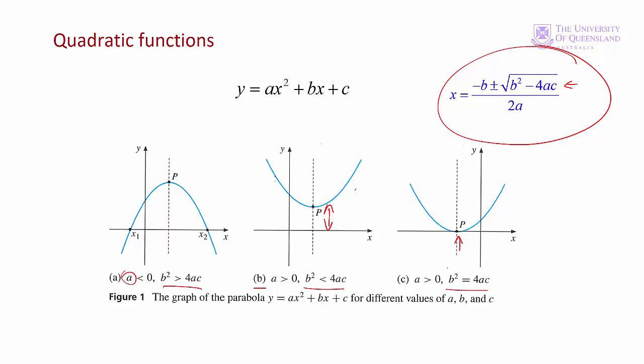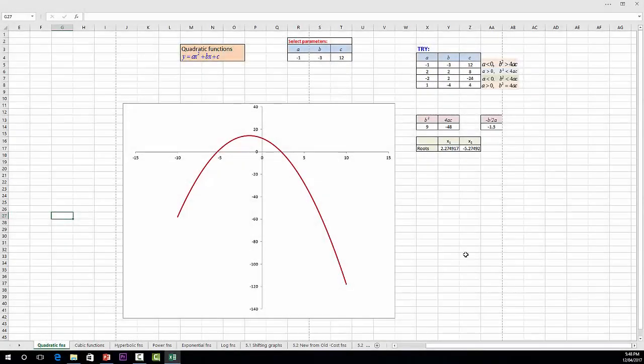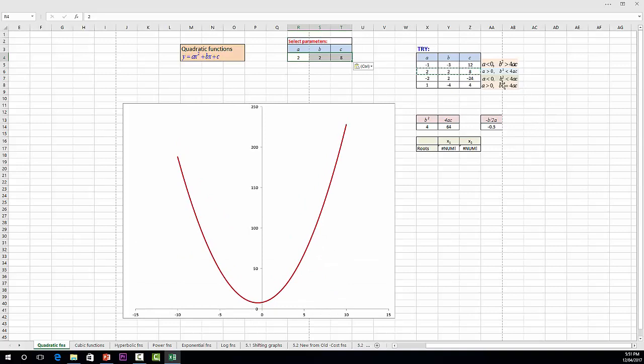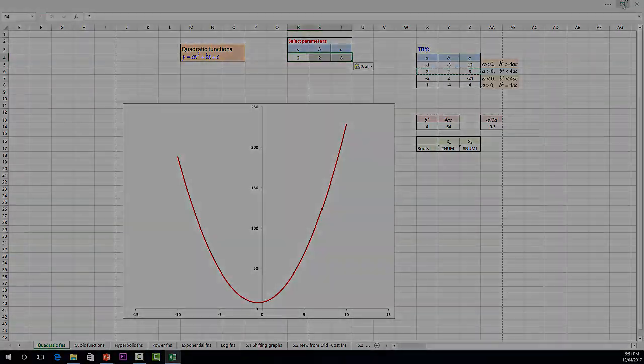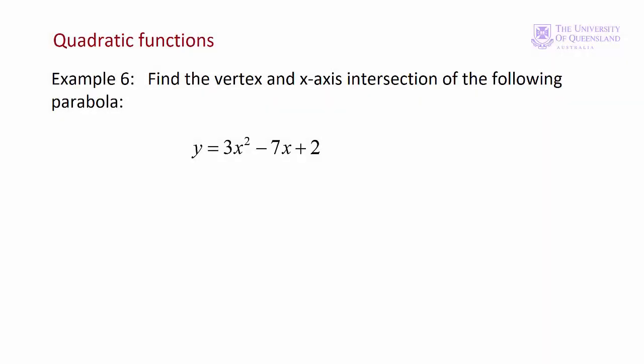This is an excel file where you can change the values a, b, and c and see how that changes the shape of the quadratic function. Let's have a quick look at that. Here we have a graph of a quadratic function. In this case, we have the parameters here. a is equal to minus 1, b is equal to minus 3, c is equal to 12. Here we have various values. We've got b squared, 4ac, so we can see what the argument of the square root is. We have the value of x at the vertex, so minus b on 2a, and we have the roots. You can change the parameters. Here are some typical values. So in this case, b squared is less than 4ac, a is positive. We see it's a u-shape, and it doesn't cut the x-axis, and so on. You can try those. You might like to look at examples 6 and 7 now.